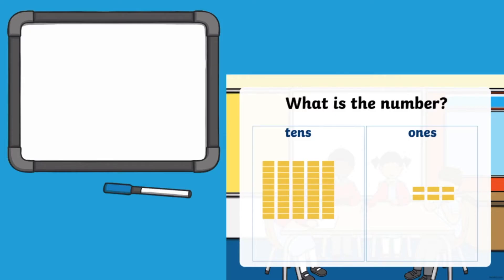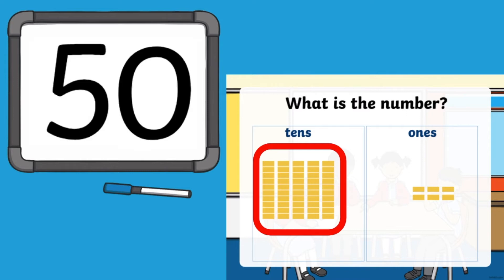You could encourage your children to use a whiteboard to help record the answer. Encourage them to begin by counting the tens and writing that number, and remind them to remove the zero before counting the ones.